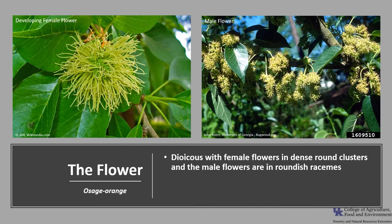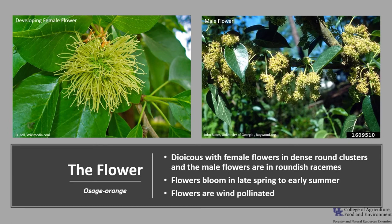Osage Orange is dioecious, which means trees have either male or female flowers. The female flowers are in dense round clusters and the male flowers are in roundish racemes, and neither are especially showy. The flowers bloom in later spring into early summer and are wind pollinated.